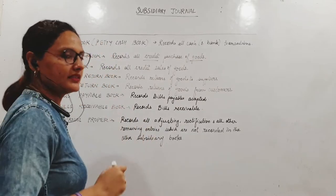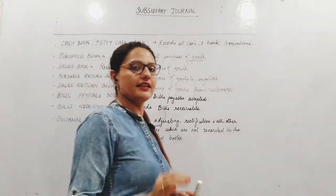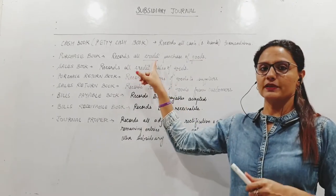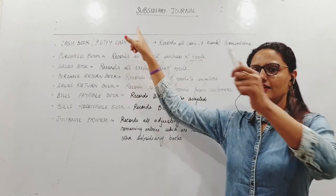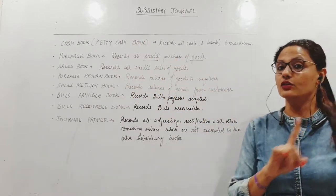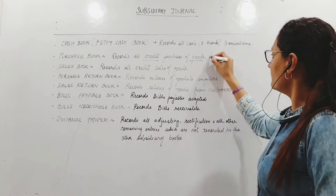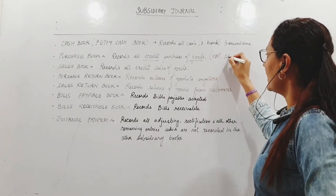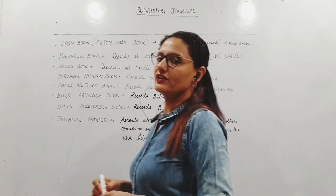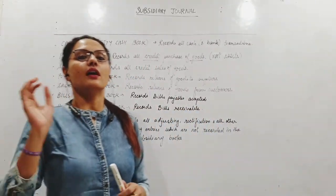Purchase book will record only credit transactions, and that of goods alone. These two words are the keywords here: credit purchase of goods only. No cash purchase because cash purchases will be recorded in cash book. It will record only credit purchase of goods, not assets. Very important - assets can also be purchased on credit but we will not record it here.